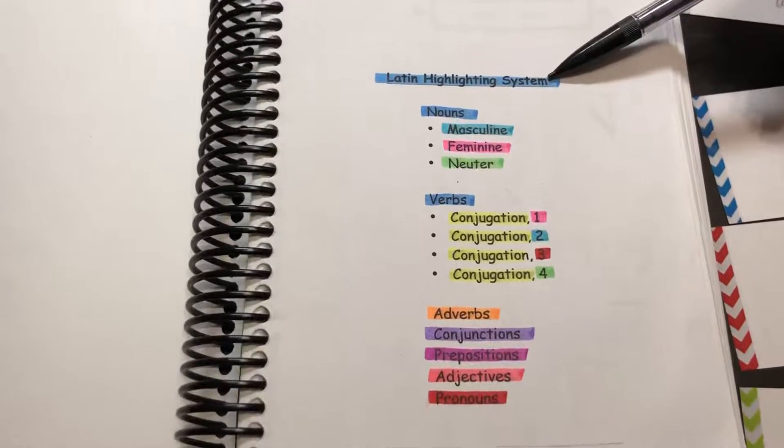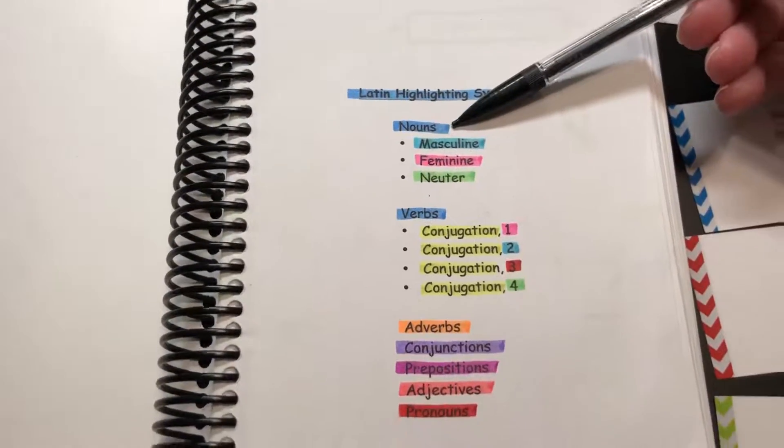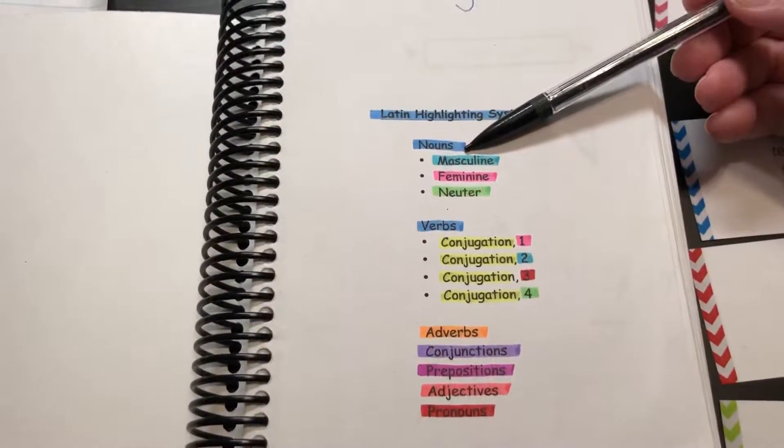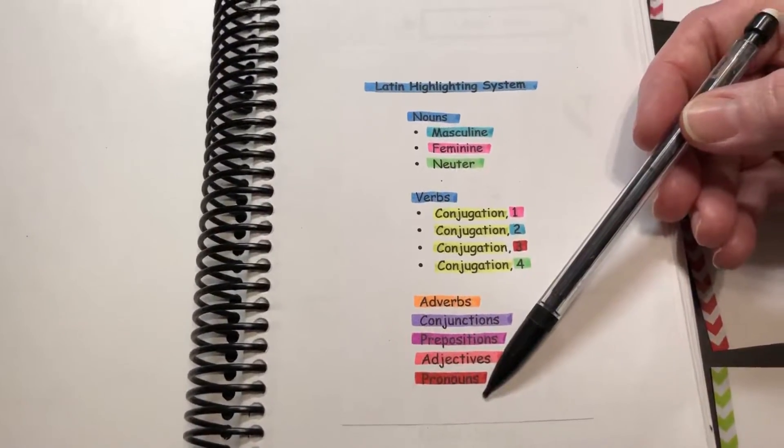This is a dark blue right here that really doesn't have anything to do with nouns and verbs. I just use it as a heading, so anytime there's a new chapter or a new heading for a new section in the chapter, I'll use that dark blue. Then down here we have these other parts of speech.